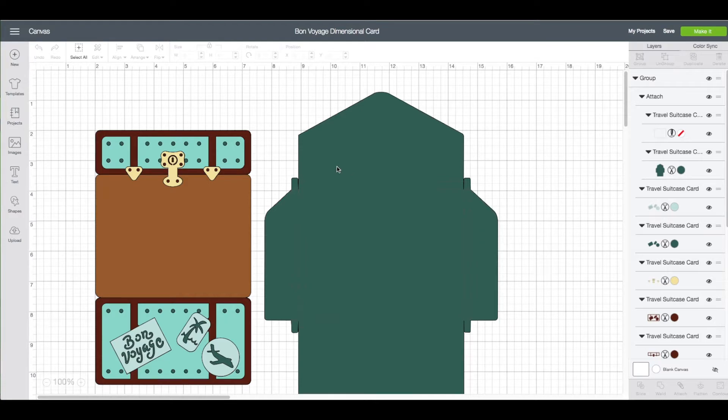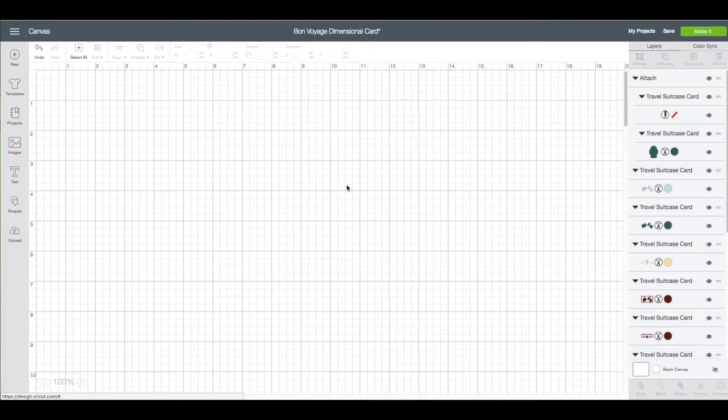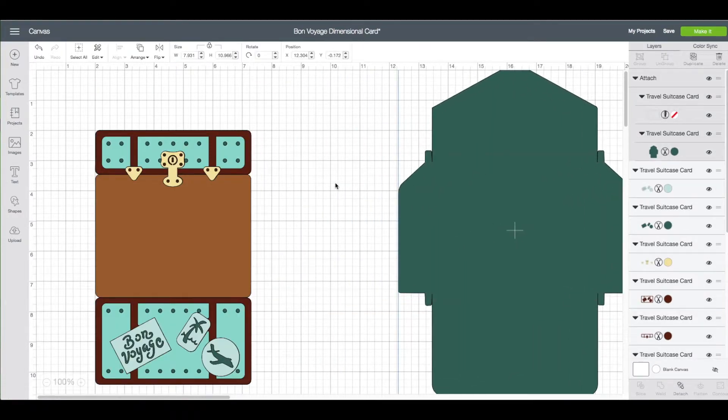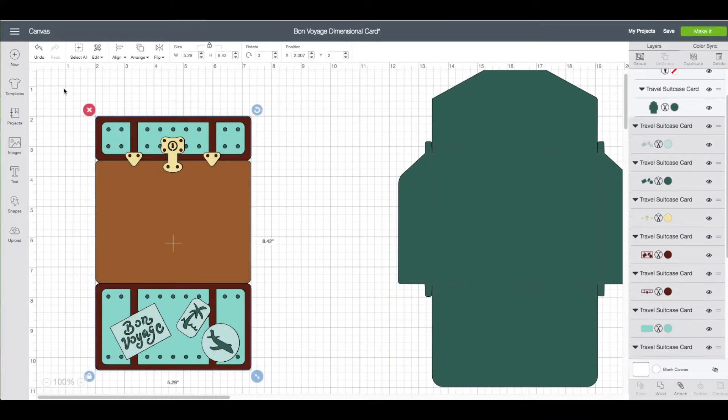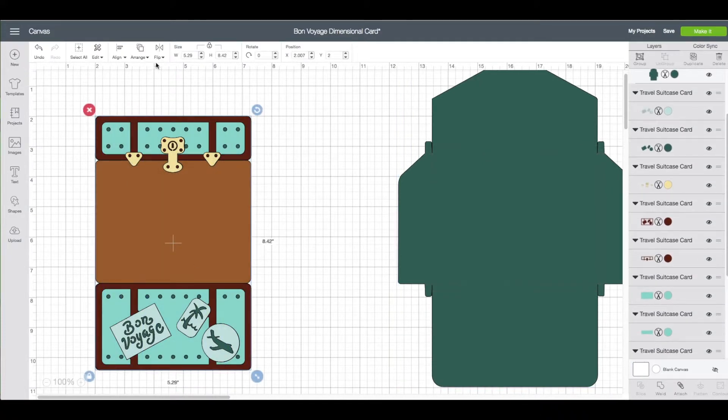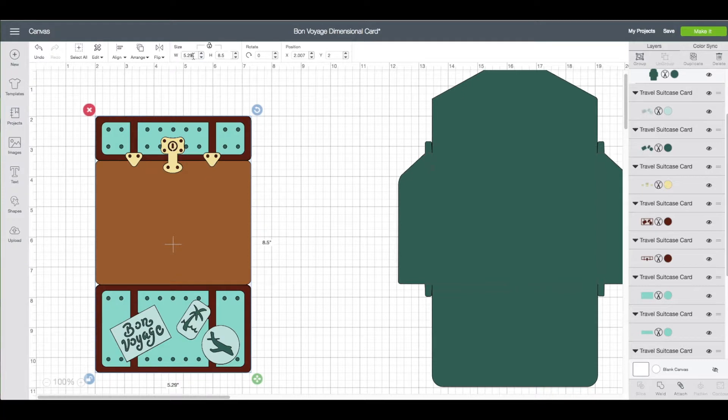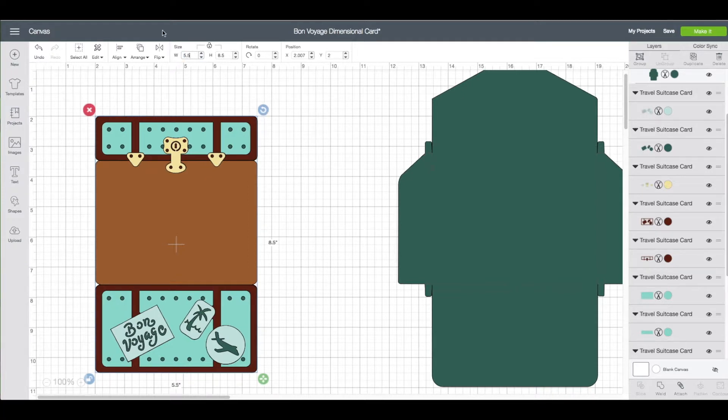So we have the card and the envelope. I'm going to right click on it and choose ungroup. Move my envelope out of the way. Take my left mouse button across the entire card. Go to the top toolbar where the size is. I'm going to unlock the lock and make the height be 8.5. Click on enter. And the width will be 5.5. Click on enter. That way is your standard A2 size card.